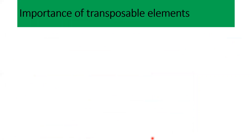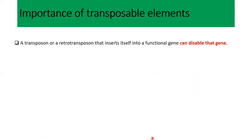Now let's consider the importance of transposable elements for different organisms. A transposon that inserts itself into a functional gene can disable that gene. Genes are DNA sequences, so when that sequence is disturbed, it can affect the gene's function — which is to produce a protein. Sometimes the gene becomes unable to produce proteins, or the proteins produced are dysfunctional.